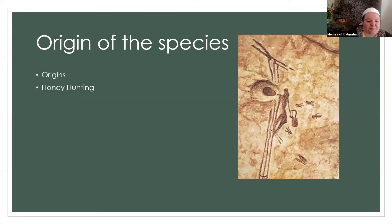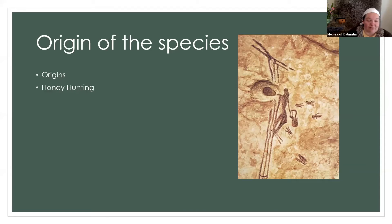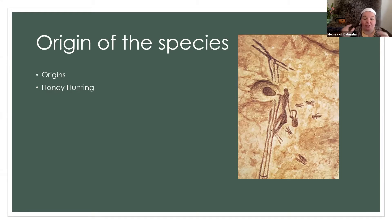Honey hunting was probably the original form of beekeeping — tracking wild bees to their hives and harvesting the honey found there. That cave painting depicts honey hunting. Over time, people figured out how to make it easier: beekeepers would encourage bees to swarm or move to areas near their home, or they would transport honey from wherever the bees nested to their apiary. There are some Aboriginal societies in Africa and Asia that still practice what we know as honey hunting.